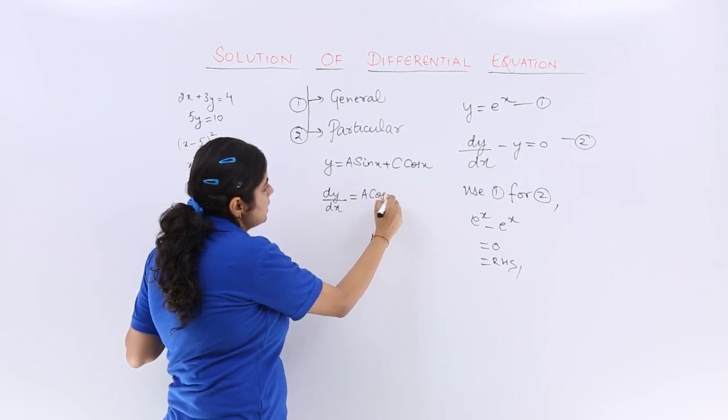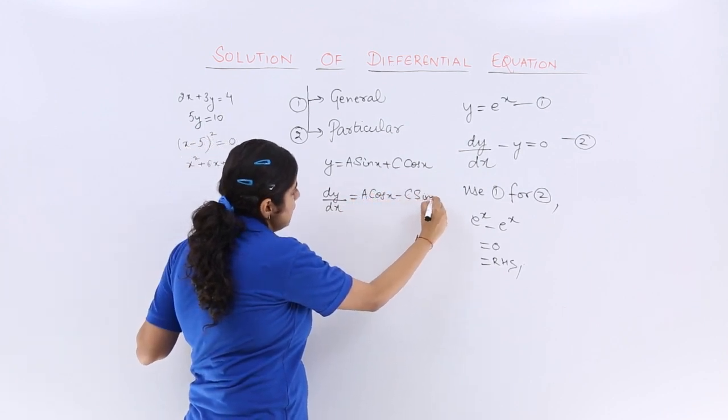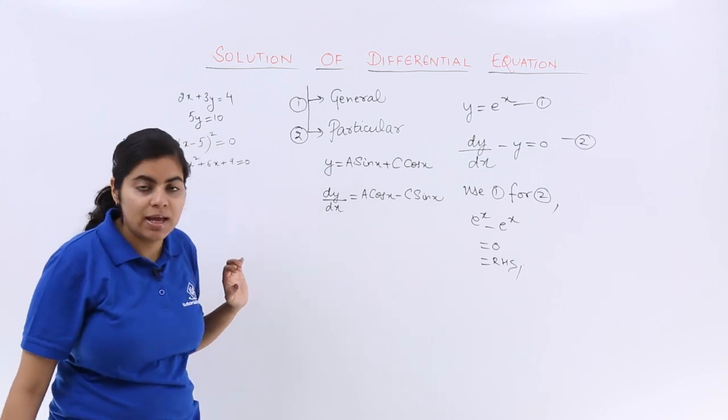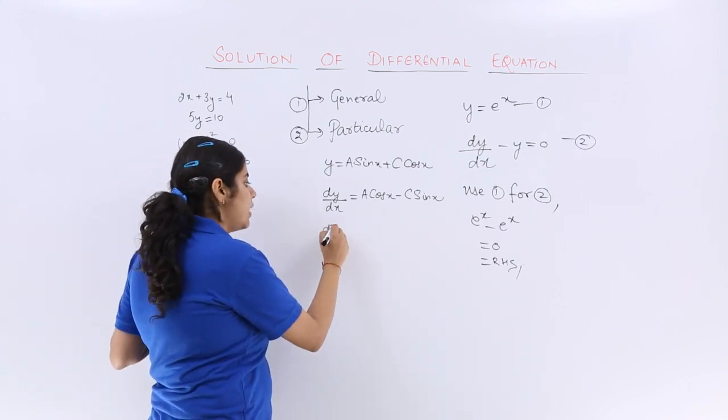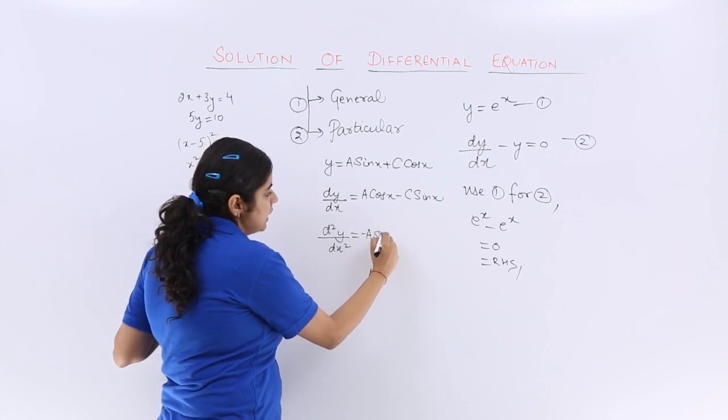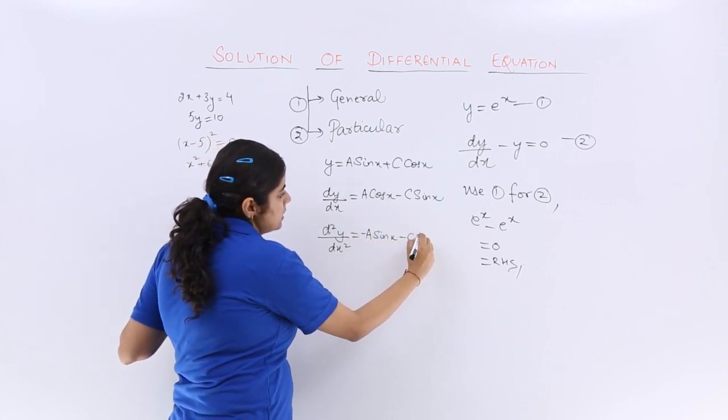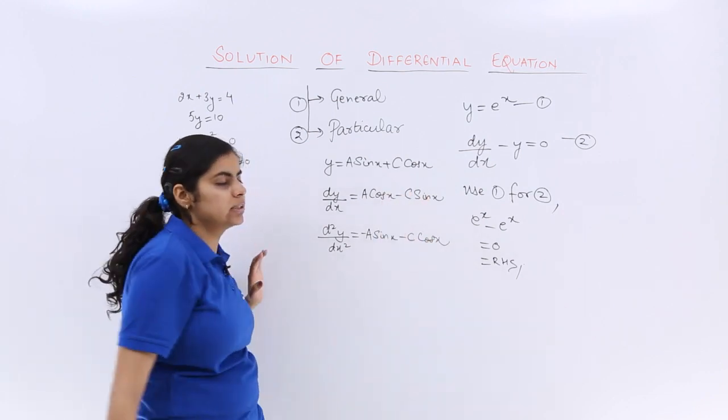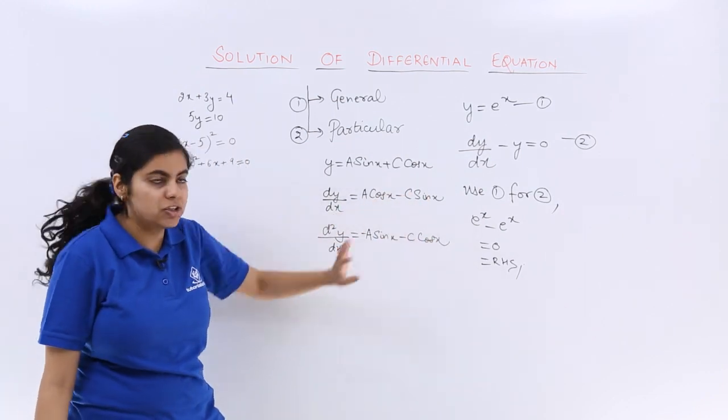It is a cos x minus c sin x. And what is d²y by dx²? That is minus a sin x minus c cos x. We are differentiating only.